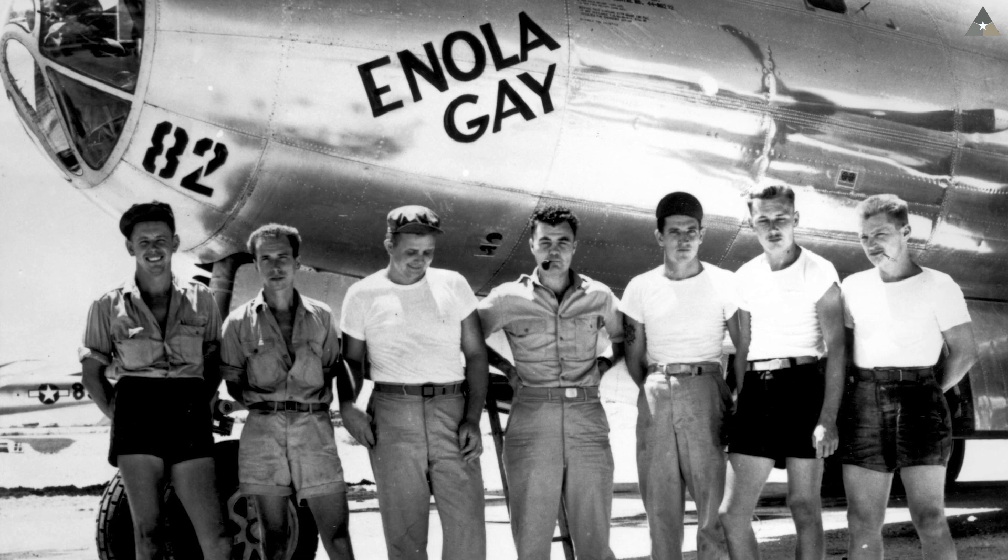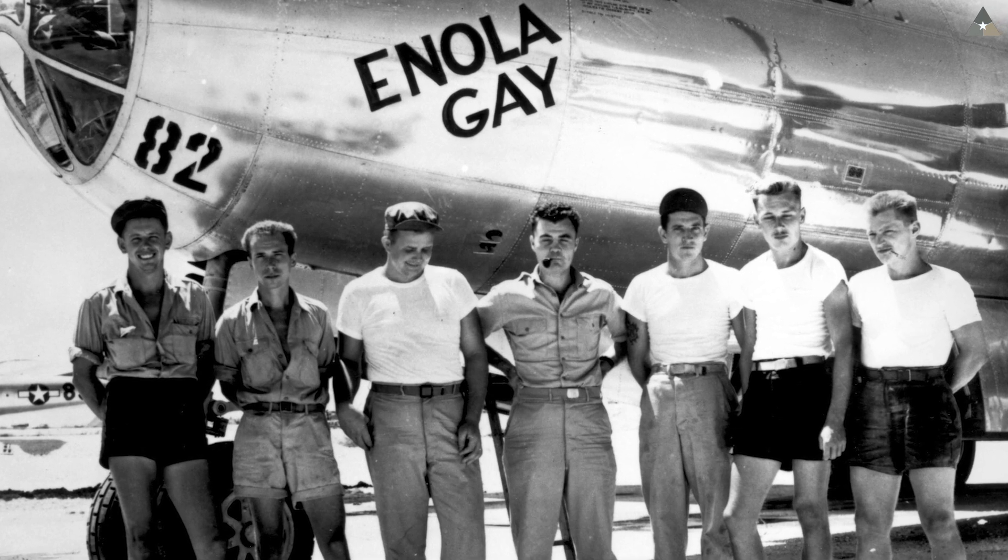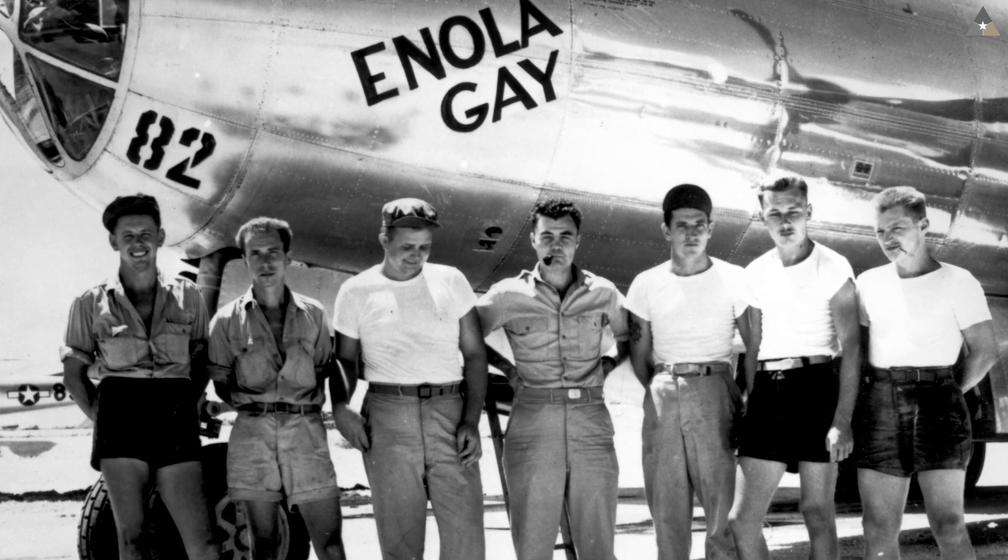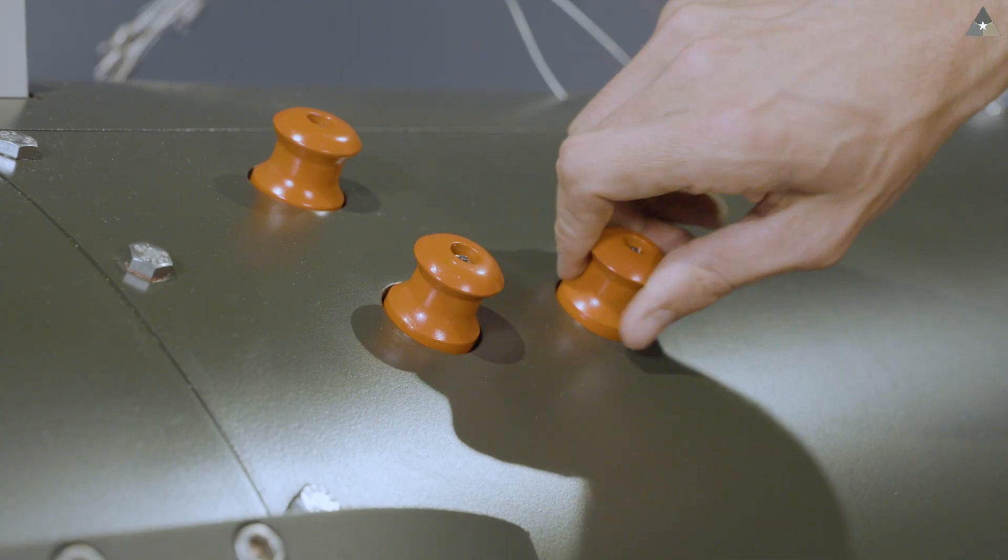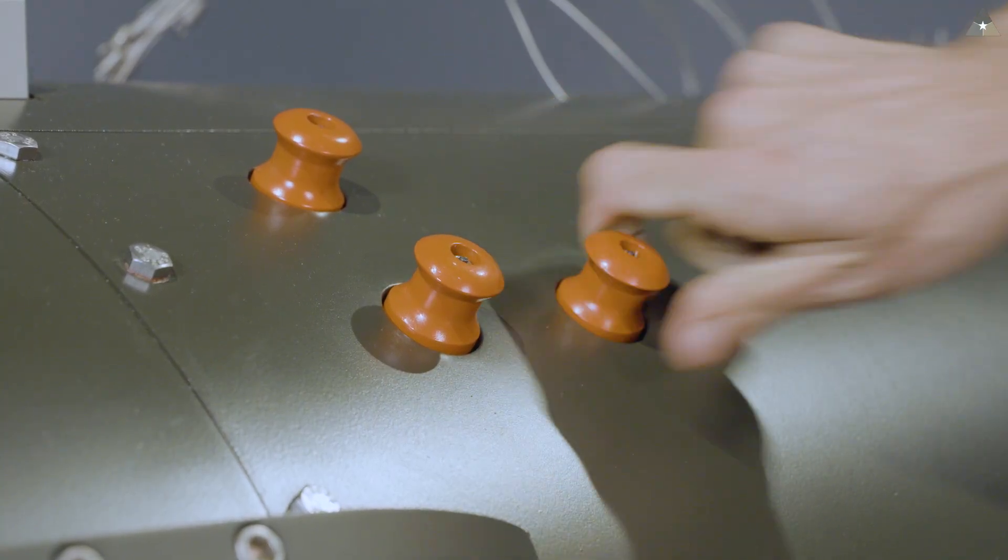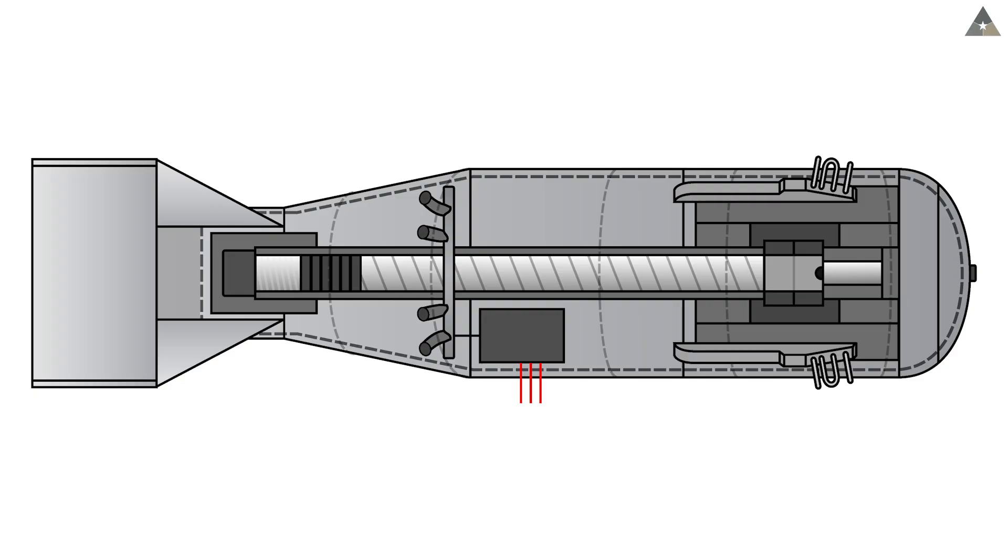The three green plugs would be removed in flight by the weaponeer William Sterling Parsons. Those green plugs would be replaced by three live red plugs allowing the electrical current to go from the battery of the bomb to the primers at the rear of the bomb.